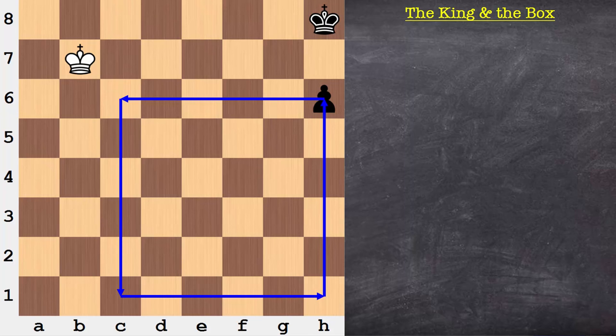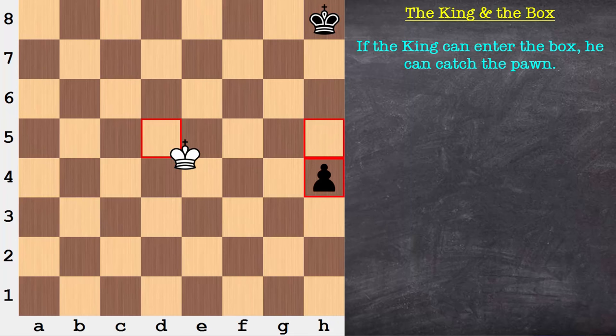Now this box is significant, because if I could answer the simple question, can the king enter the box—and by enter the box I mean to be anywhere on the edge or inside of the box—if the king could enter the box, and he can, well, he can now catch the pawn. If the king could enter the box, he will be able to catch the pawn.